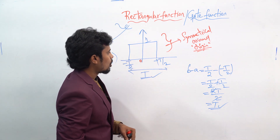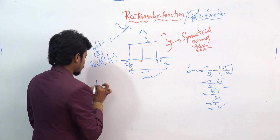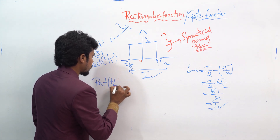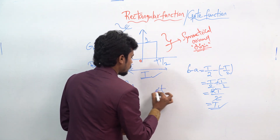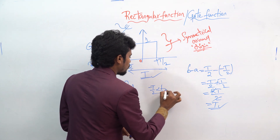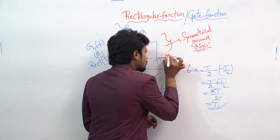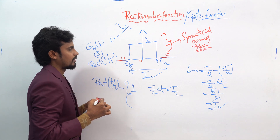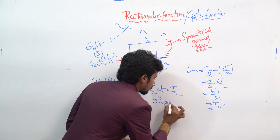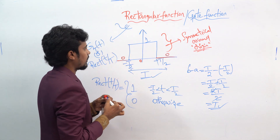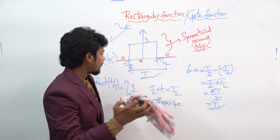If you want to write the representation for this rectangular function, rect of small t divided by capital T equals 1 for t in between minus T by 2 and plus T by 2, and equals 0 otherwise.